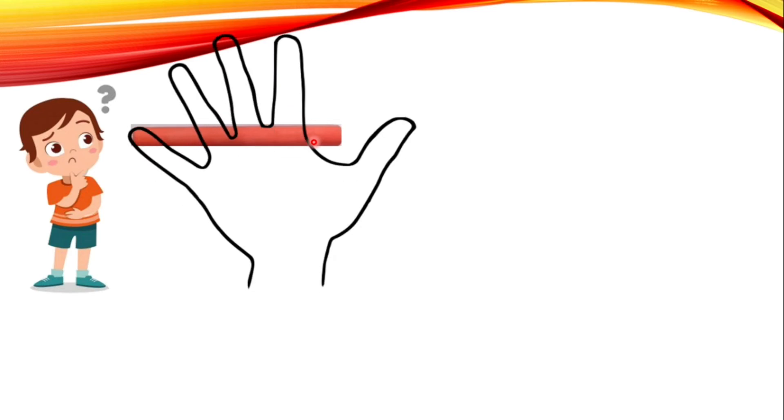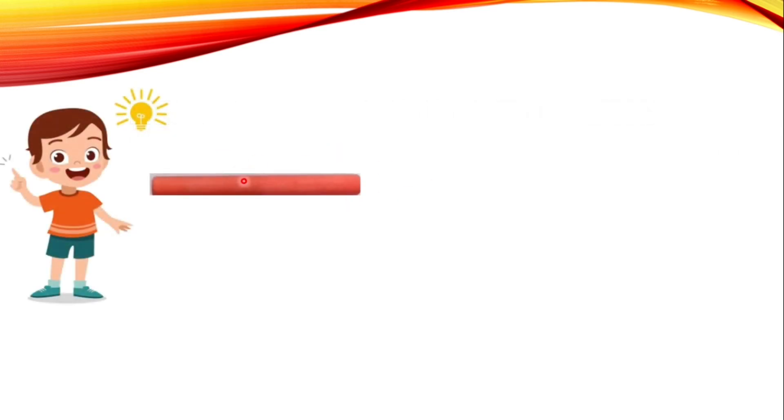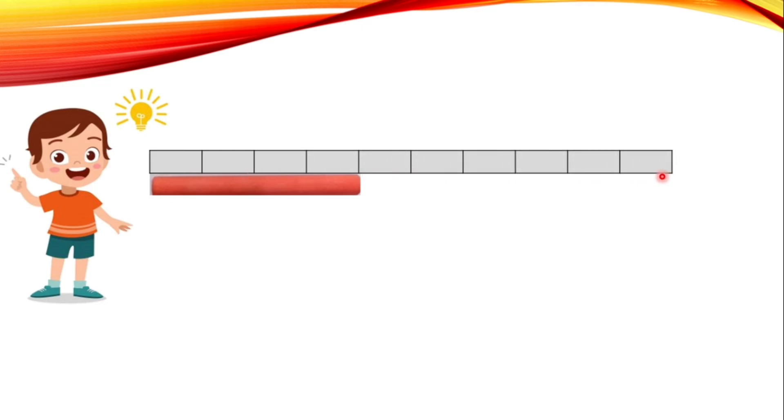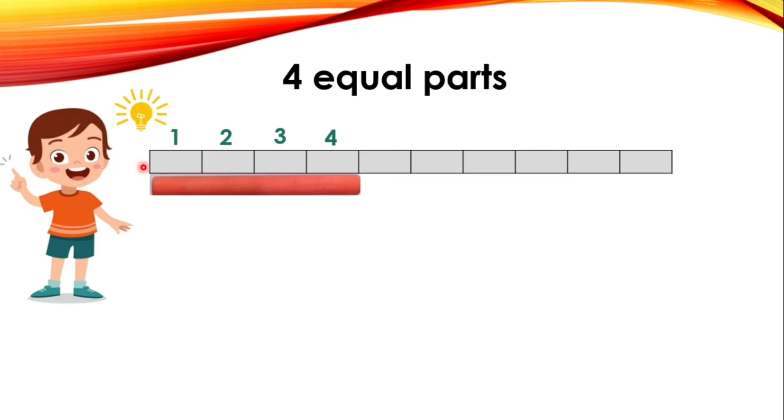Now a boy named Shobham wanted to measure the length of a chalk piece. He tried using his hand span but it was too big. He tried a strip of paper but wasn't satisfied. Then he got an idea — he folded the paper strip into equal parts, numbered the parts one, two, three, four, and said the chalk measures four equal parts of the strip.